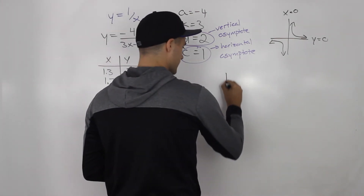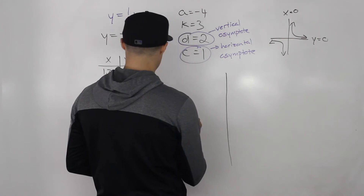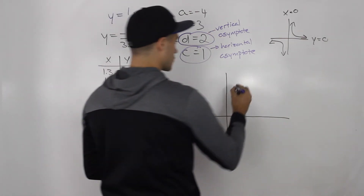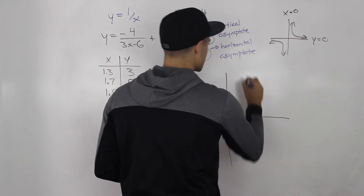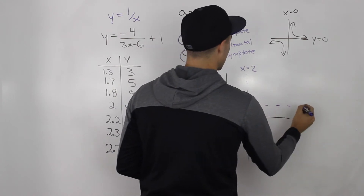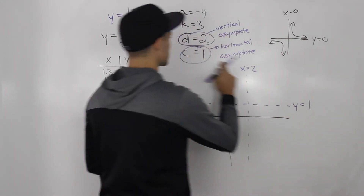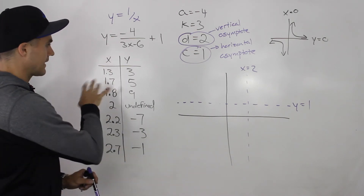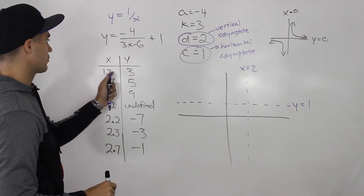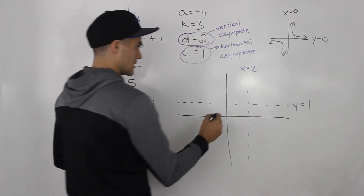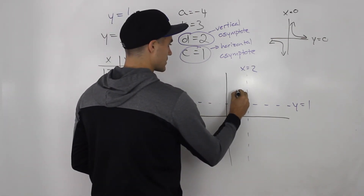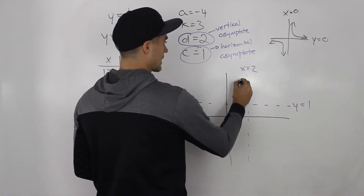When graphing a transformed reciprocal function, I highly recommend drawing the asymptotes first. Draw the vertical asymptote as a dotted line at x = 2, and draw the horizontal asymptote at y = 1. Now let's plot these points — they should make a lot more sense on the graph. For instance, (1.3, 3) is somewhere here, (1.7, 5) maybe here, and (1.8, 9) is here.